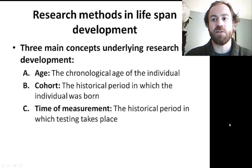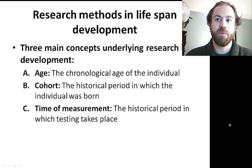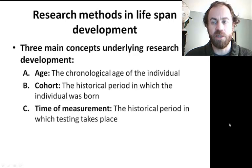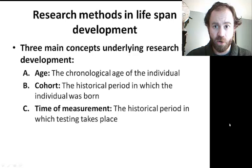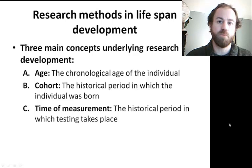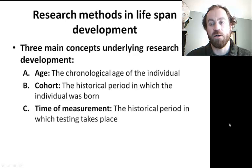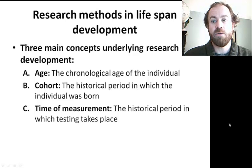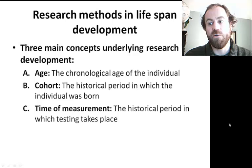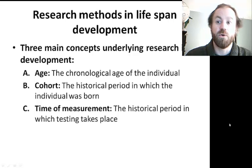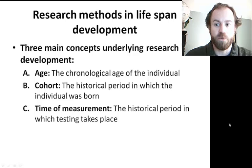Research in developmental psychology has its own set of inherent problems. There are three main concepts underlying research and development: age — the chronological age of the individual; the cohort — the historical period in which the individual or group was born; and the time of measurement — the historic period in which the testing actually takes place. Because any one of these numbers is automatically determined once the other two are known, researchers can never know whether a particular pattern of findings is due to age itself, the historical period of birth, or the period of testing.